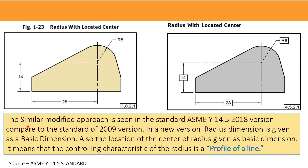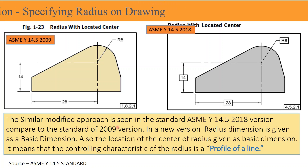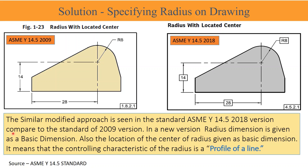A similar modified approach is seen in the standard ASME Y14.5 2018 version compared to the 2009 version. In the new version, the radius dimension is given as a basic dimension, and the location of the centre of the radius is also given as a basic dimension. This means that the controlling characteristic of the radius is a profile of a line — so the measurement of a radius variation does not give the accept or reject criteria, but the profile of a line would be the output for acceptance or rejection of the part.